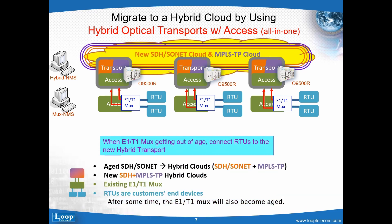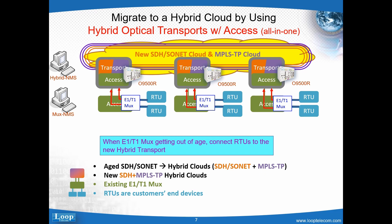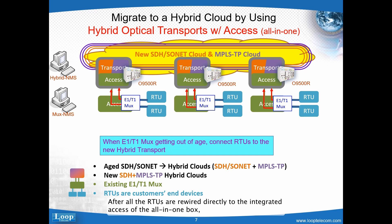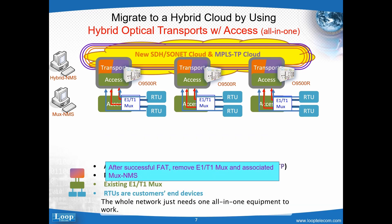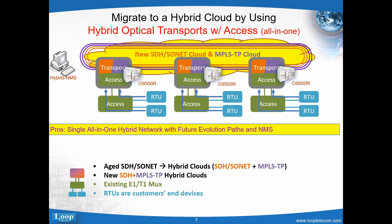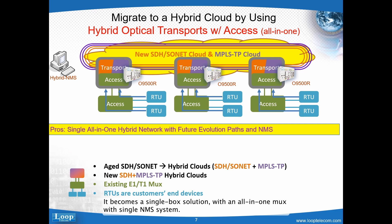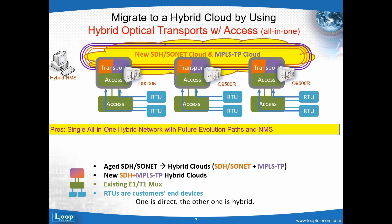After some time, the E1T1 MUX will also become aged. This new system has integrated access including DS0 services, and some RTUs can directly connect to this new access node. After all the RTUs are rewired directly to the integrated access of the all-in-one box, the old E1T1 MUX can be taken out. The whole network just needs one all-in-one equipment to work. This reduces all the space and energy issues endemic to the direct approach, becoming a single box solution with an all-in-one MUX and a single NMS system. One approach is direct, the other is hybrid — a choice MCC customers can make.